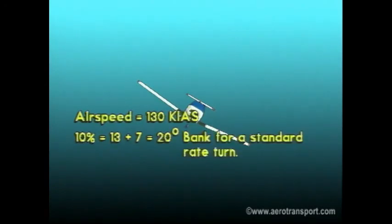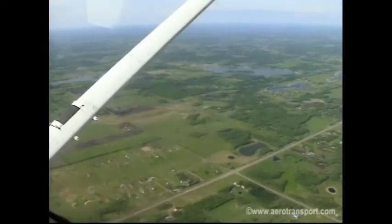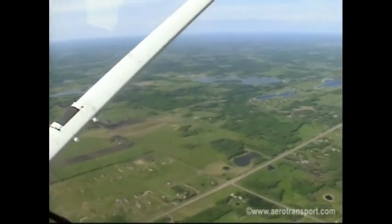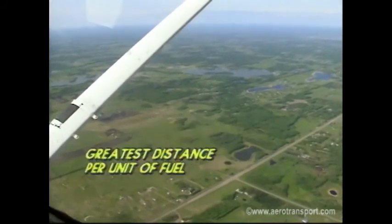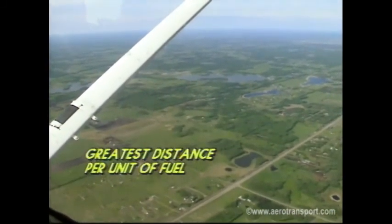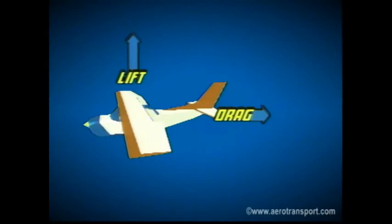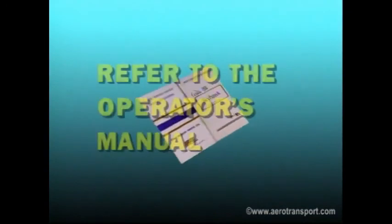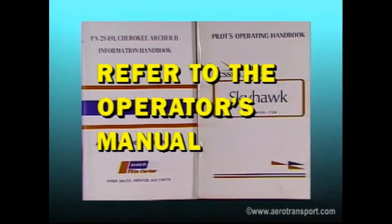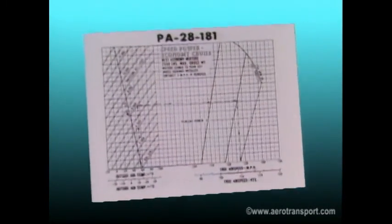The final section of this tape deals with range and endurance. When an aircraft is flown for range, you are trying to get the greatest distance per unit of fuel. That means the aircraft must be flown at the optimum lift-drag ratio airspeed, which gives you the most lift with the least drag. The flight manual of your aircraft should have cruise performance charts which give airspeeds for optimum range. Keep in mind these figures are for still air, so you still have to account for wind.